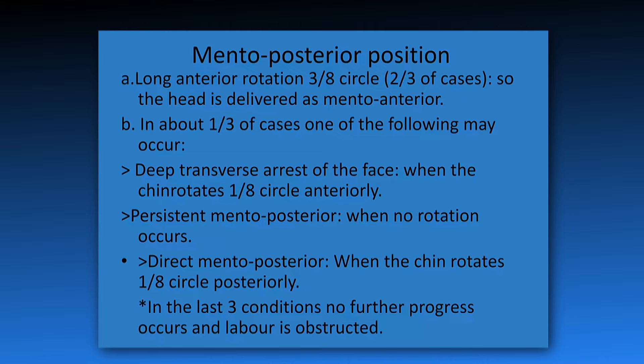In the mento-posterior position, there is a long anterior rotation of three-eighths of the circle, and the head is delivered as mento-anterior in about one-third of cases. One of the following may occur: deep transverse arrest of the face, which occurs when the chin rotates one-eighth of the circle anteriorly; persistent mento-posterior where no rotation occurs; or direct mento-posterior where the chin rotates one-eighth circle posteriorly. In the last three conditions, no further progress occurs and labor is obstructed.